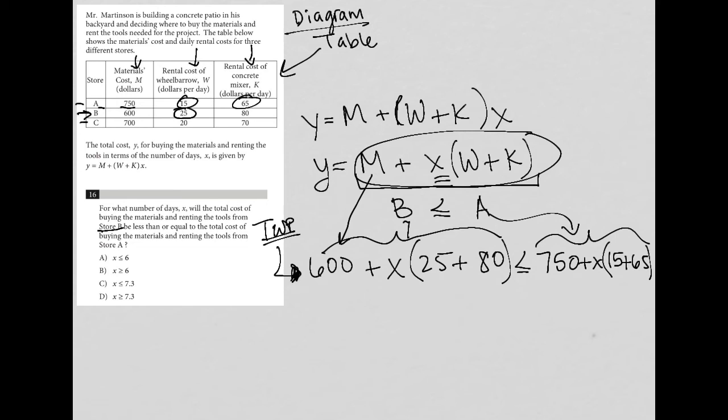All right, so let's simplify this. So I'd have 600 plus, I'm going to combine these inside of my parentheses because of PEMDAS. 25 plus 80 is 105. And then because of the X out here in front, 105 times X is 105X, is less than or equal to 750 plus, 15 plus 65 is 80. Again, 80 times X is 80X. So 750 plus 80X.